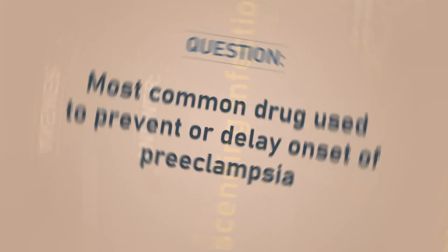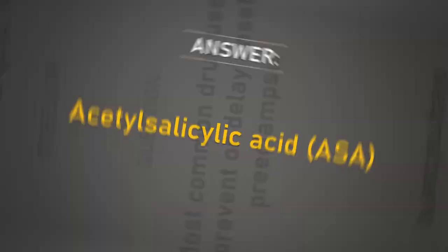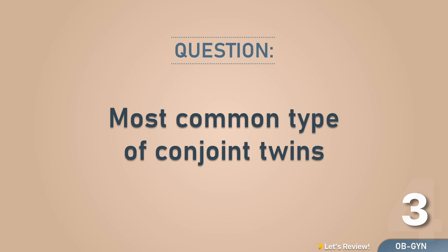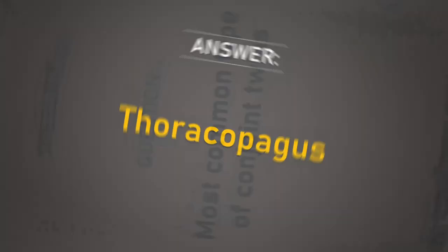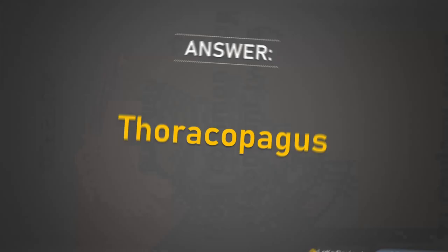Most common drug used to prevent or delay onset of preeclampsia: acetylsalicylic acid (ASA). Most common type of conjoined twins: thoracopagus.